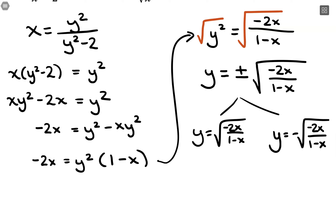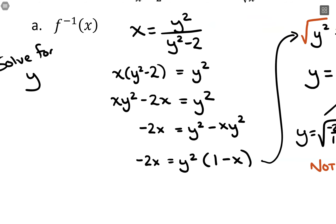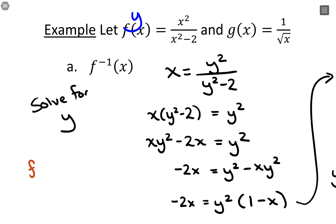If I wanted to plug in a value, say x = 2, I would have to apply it to both of these equations to get y. That right there is not a property of functions — remember, for every input there's exactly one output. We ended up with two different outputs to be calculated, so this is not a function. What I would say is that the original f(x) is not invertible.